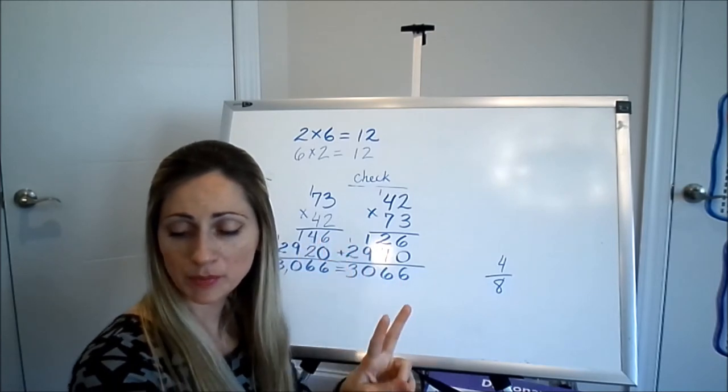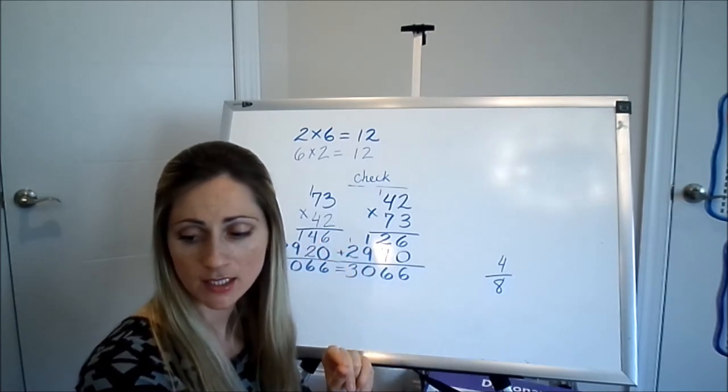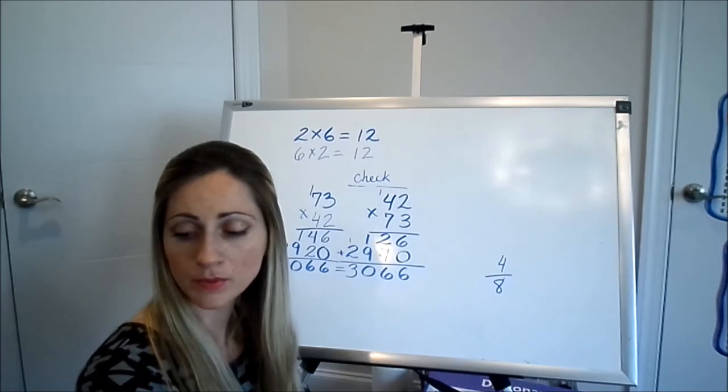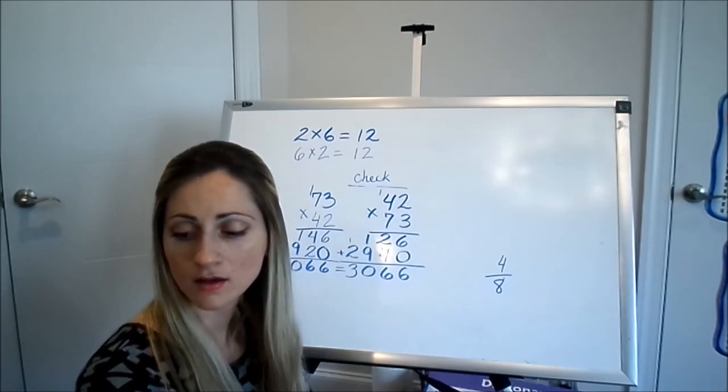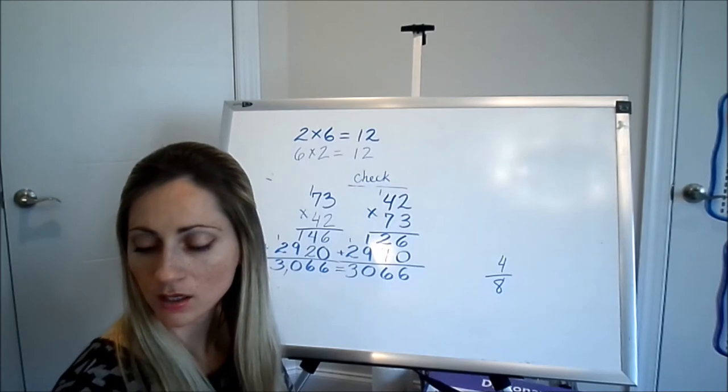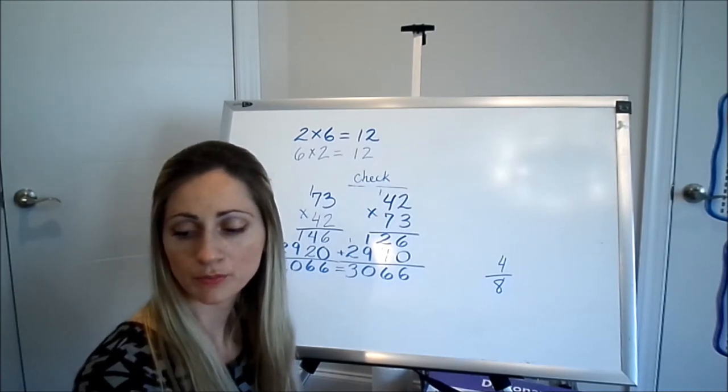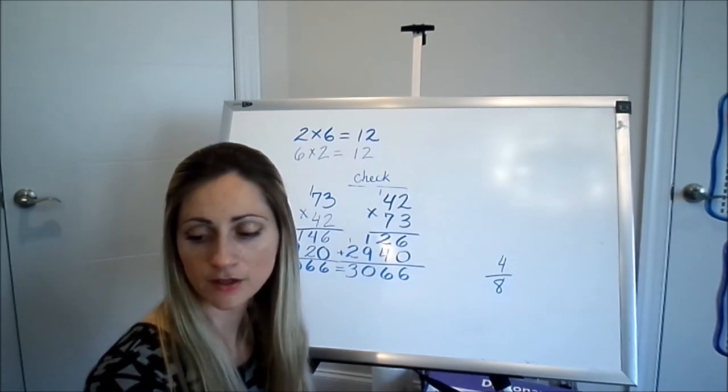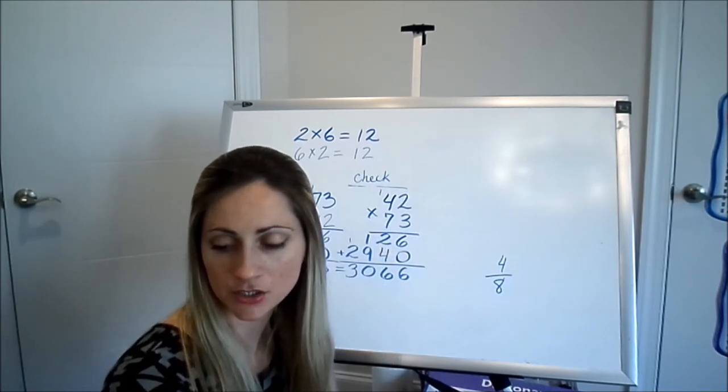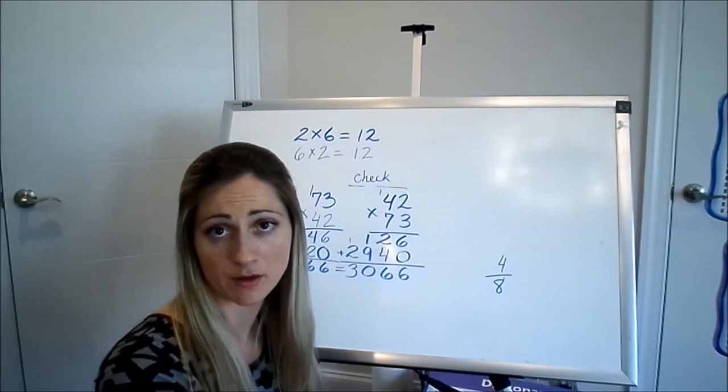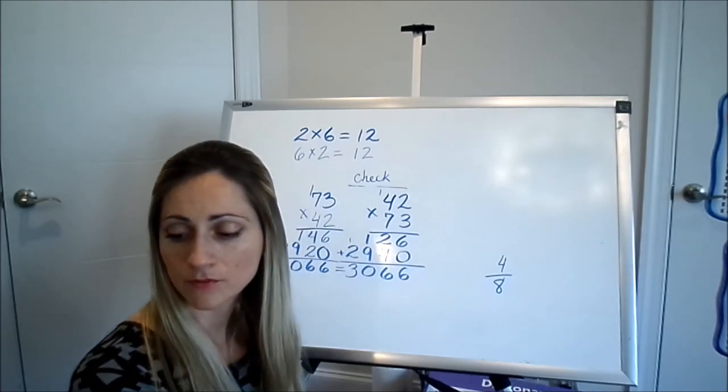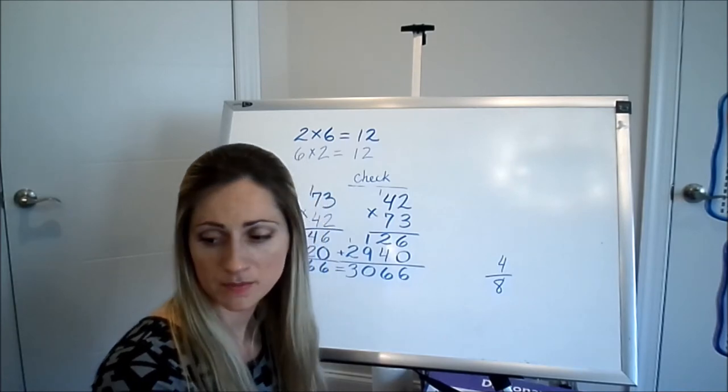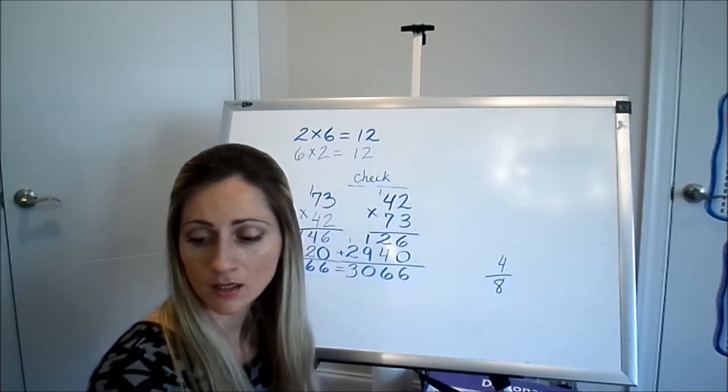So the story problems are two steps because they give you the price of one pound of sliced turkey, but the girl bought several pounds, more than one pound. So you've got to figure out how much the turkey is going to cost her. So that's your first step and then you're going to find out how much she spent it all. For number 2B, it is also two steps.